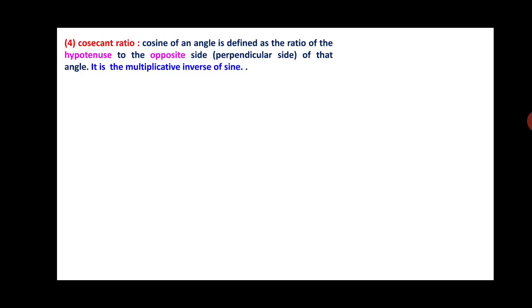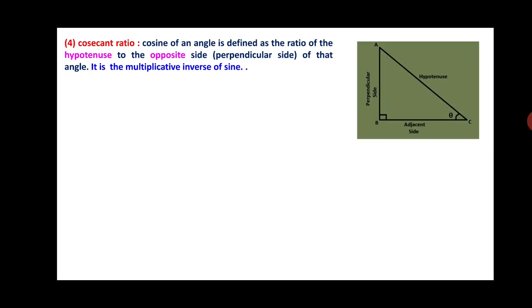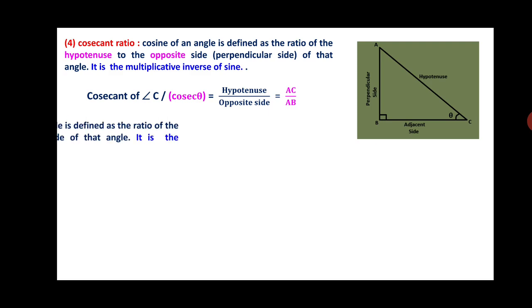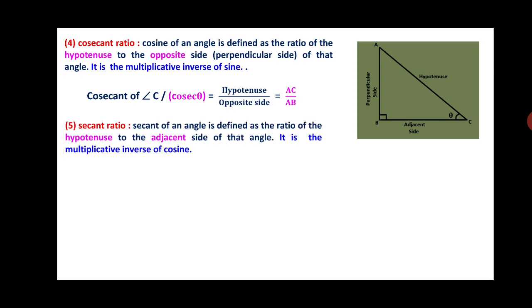Now we will see the next three ratios. Fourth: cosecant ratio. Cosecant of an angle is defined as the ratio of the hypotenuse to the opposite side — it is the multiplicative inverse of sine. Therefore, cosecant of angle C, written as cosec θ, is equal to hypotenuse upon opposite side, that is AC upon AB.